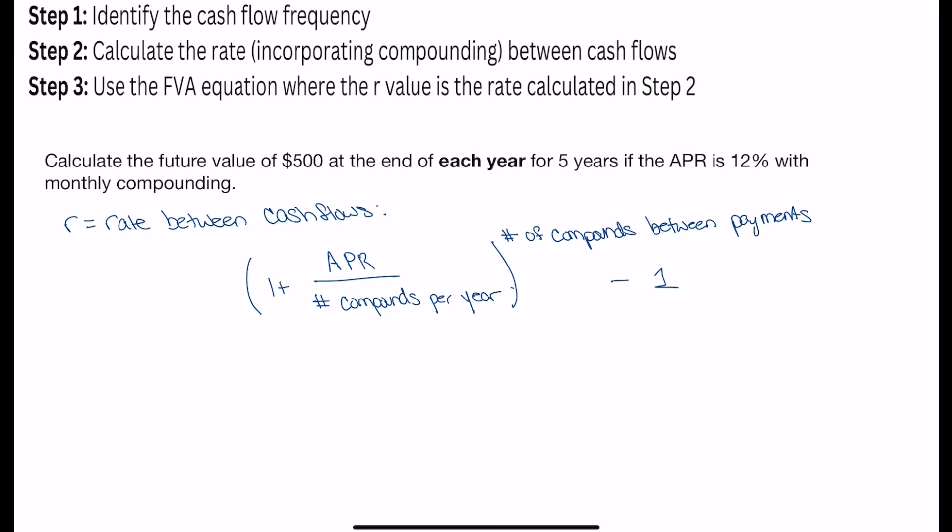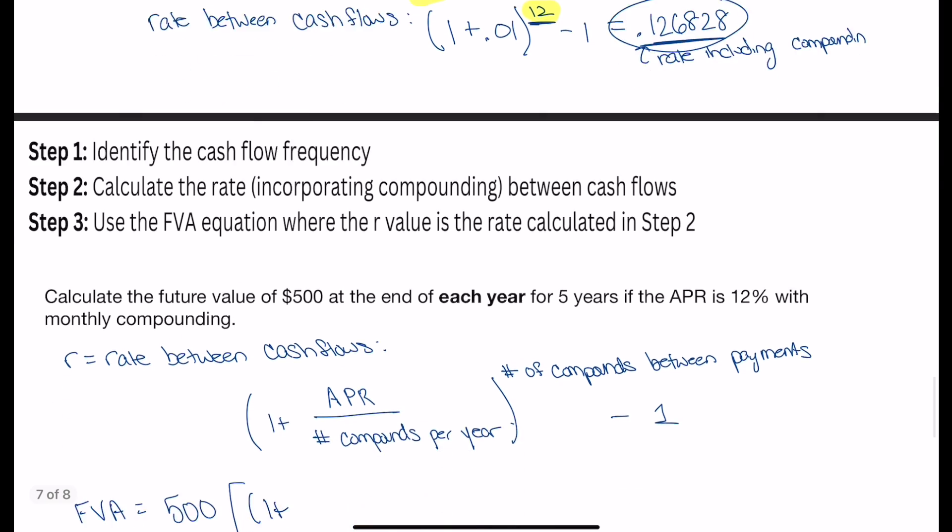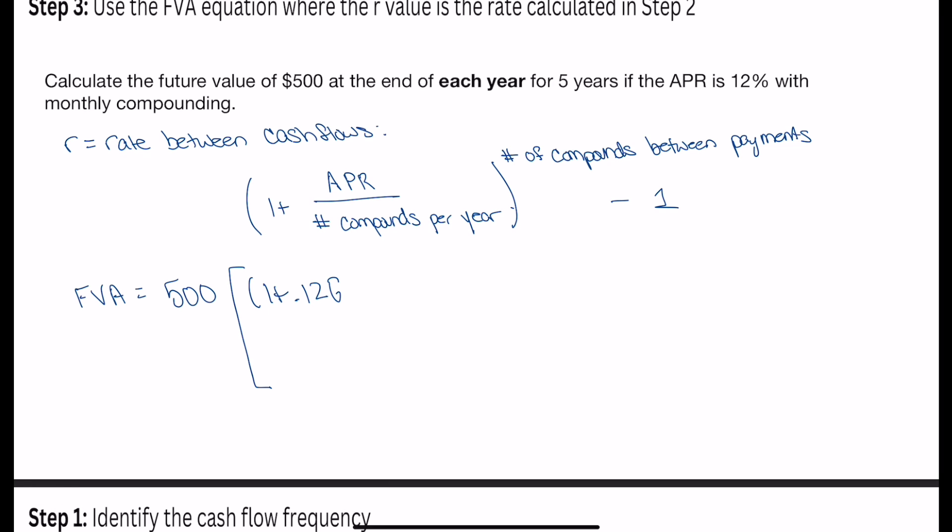Now last up, we're actually going to solve the problem. So we need the future value of an annuity is equal to our cash flow. So the cash flow was $500. We have one plus our rate between cash flows. So that's the number we solve for above. We want to keep it in decimal form. The number of cash flows is 5 annual cash flows minus 1 divided by that rate again. And we end up with an answer of 3,219.777. It honestly depends how many decimal places you round this rate to, what your answer will end up rounding to. If I round it to the nearest cents, it should be 3,219.78.